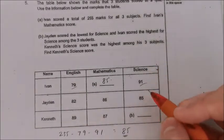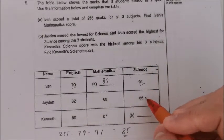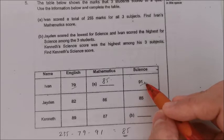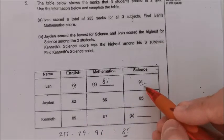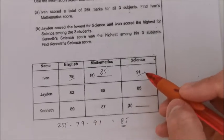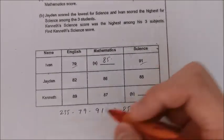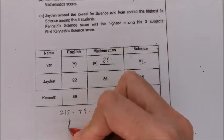So you see, Jayden scored the lowest for science and Ivan scored the highest for science. So for Kenneth, his marks has to be somewhere in between because he will be number two. Sorry, for Kenneth, right?